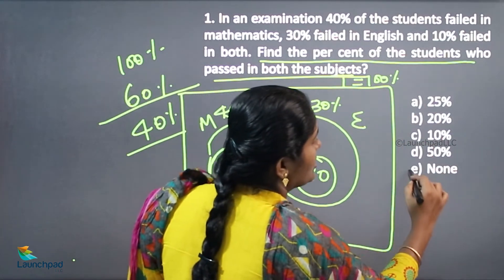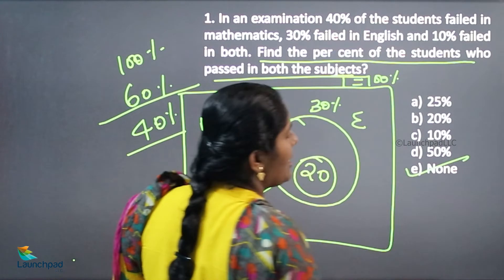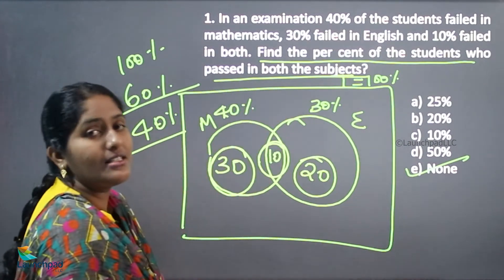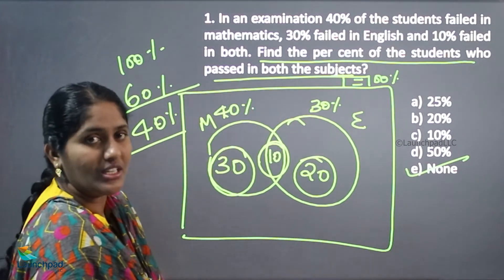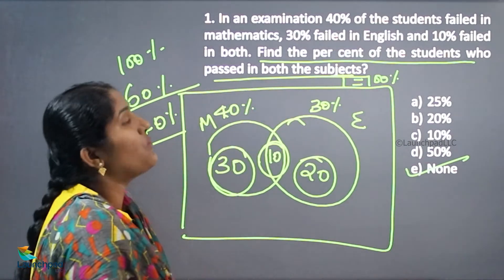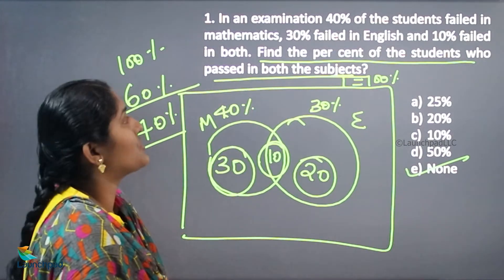Hence, the remaining 40 percentage is the pass percentage of the students. The 40 percentage is not available among the options. Hence, your answer is none of these. We will move on to the next question.